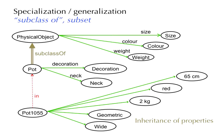For pots we may want to record what decoration they bear and whether they have a wide, narrow, long, or short neck. So decoration and neck are descriptive properties for pots but not for all physical objects. Therefore the superclass has the three properties size, color, and weight, whereas the subclass has the inherited properties size, color, and weight plus the local properties decoration and neck.